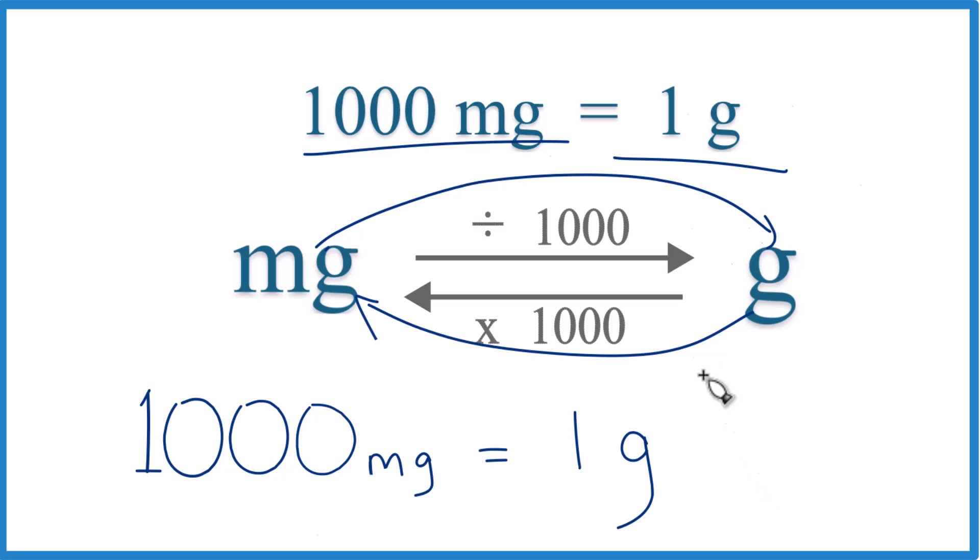But that's it. 1,000 milligrams, that equals 1 gram. That's our conversion factor. And you need to remember it.